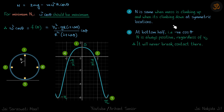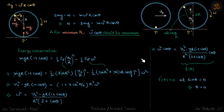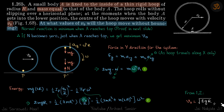In the bottom half, cosθ is negative, so the term mω²r·cosθ is always negative, making N = 2mg − mω²r·cosθ always positive. This means the hoop will never break contact in the bottom half, regardless of the value of v₀. So that is the end of this problem — there are a lot of learnings here.